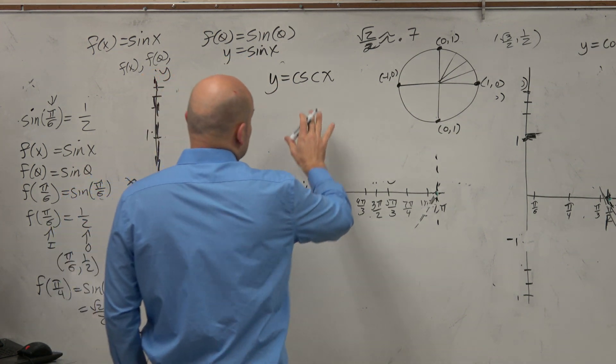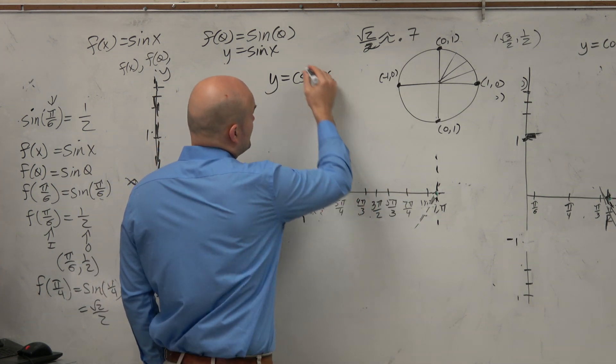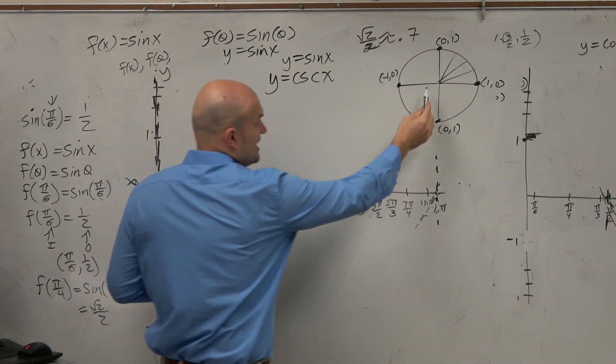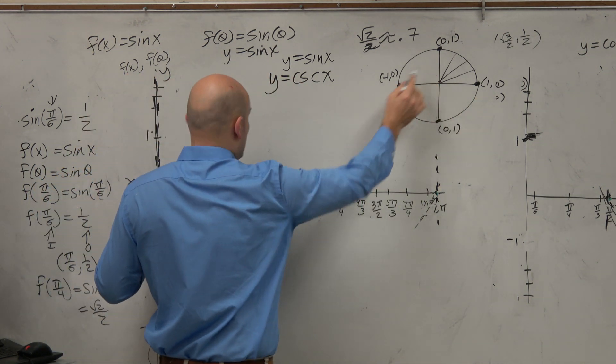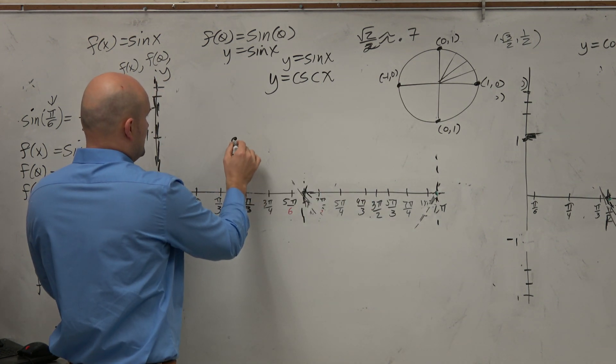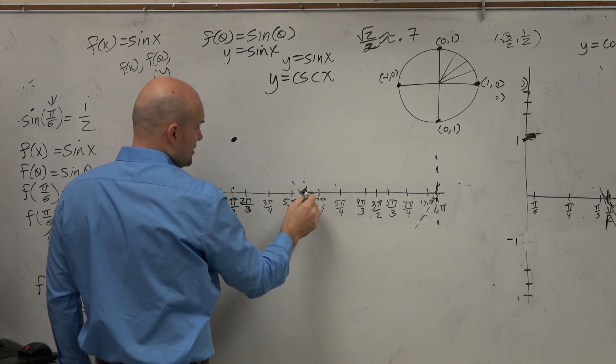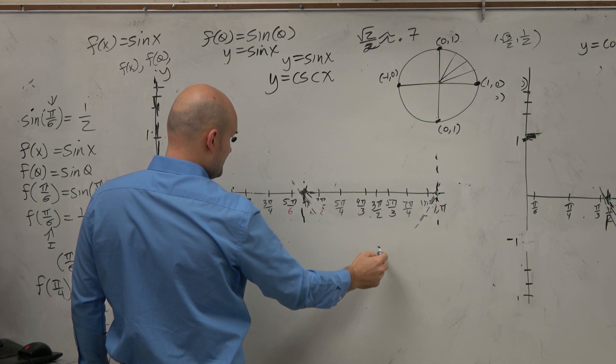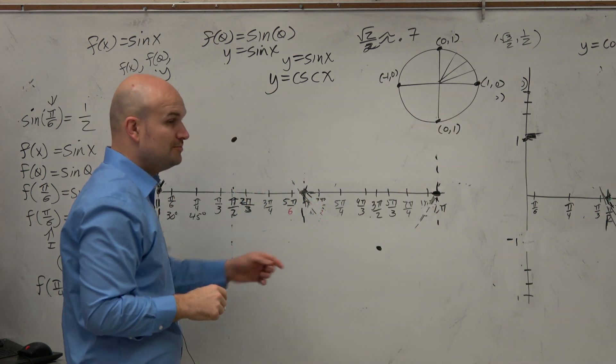When looking at the sine function, y equals sine of x, which is the y coordinate, we could see at the angle 0, sine was 0. At the angle π/2, sine of π/2 was 1. At π, the sine is 0. At 3π/2, the sine was negative 1, and then at 2π, the sine was 0.